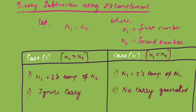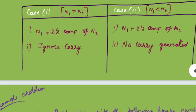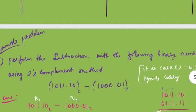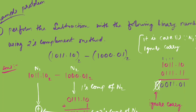Coming to Case 2: n1 plus two's complement of n2 — the first step is the same. And the second step is also the same: no carry will be generated. According to this, we are going to see some problems using one's complement and two's complement.